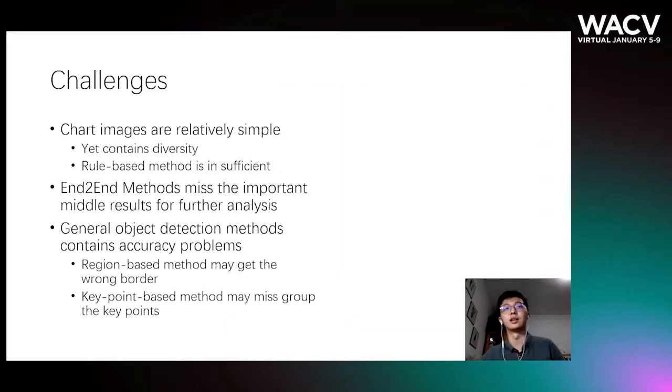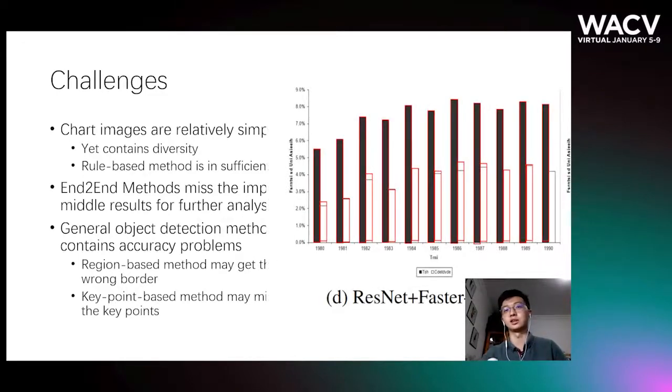Second, end-to-end methods miss the important middle results for final analysis. You only get the data values, but you don't know where exactly the chart component is. Finally, general object detection methods contain accuracy problems. The range-based methods make mistakes at the border. It's basically correct, but there's an accuracy problem near the border.